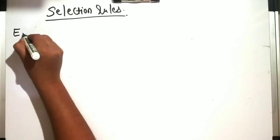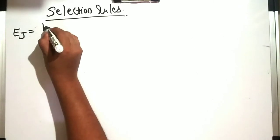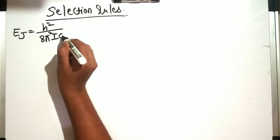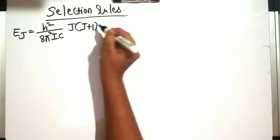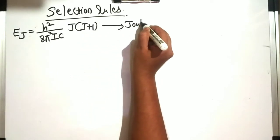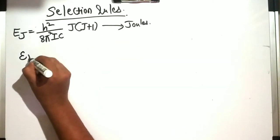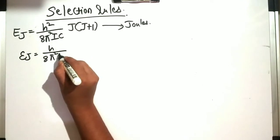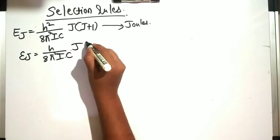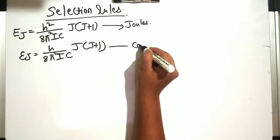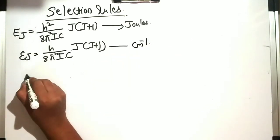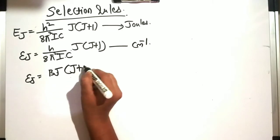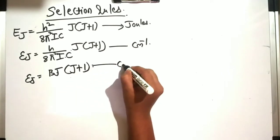Whenever we have a Schrödinger equation in joules, our equation was h-squared divided by 8 pi-squared i into c, times j(j+1). In terms of centimeter inverse, that was h divided by 8 pi-squared i into c, times j(j+1). We introduced a new term B, so the energy is B times j(j+1), also in centimeter inverse.